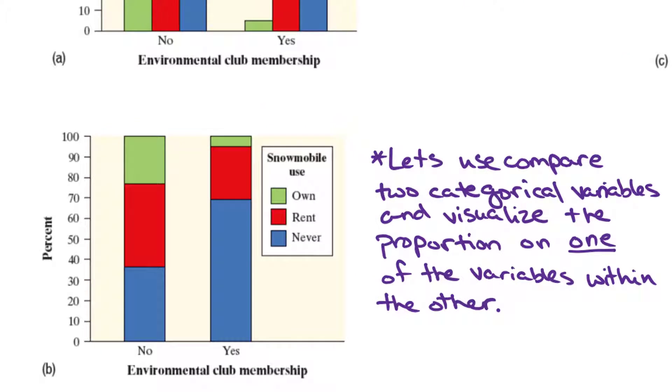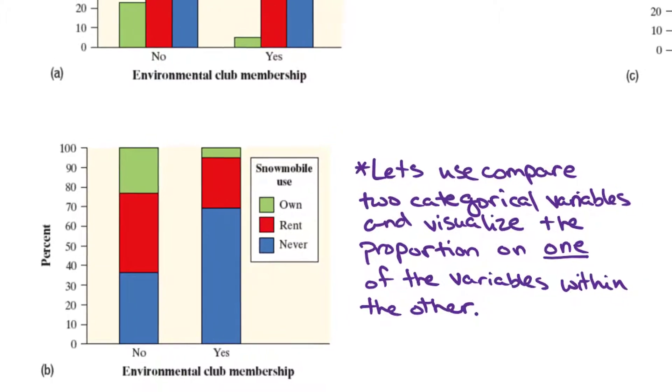In part B, we see a segmented bar graph. Similarly, on the horizontal axis, we have the environmental club membership, yes or no. And then we just have two bars, one bar for the yes, one bar for the no. And so we are going to break this up where we have the never on the bottom represented in blue, then the rent percentage in red, and then the green is the owns a snowmobile. So this lets us compare the yes and the no's more visually, where the entire bar adds up to 100%.